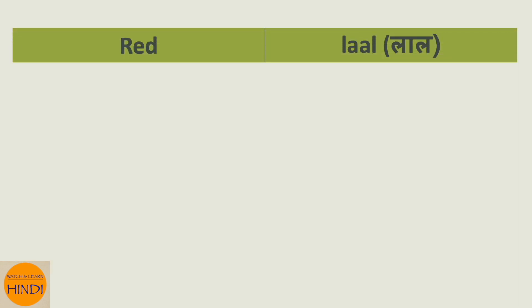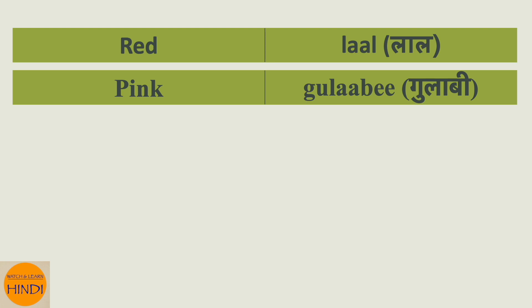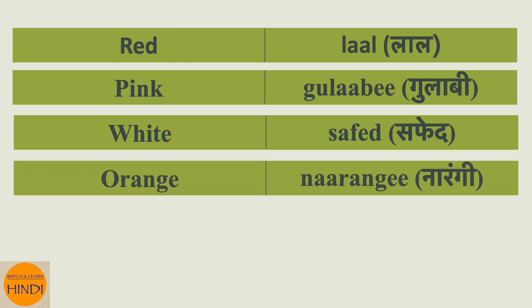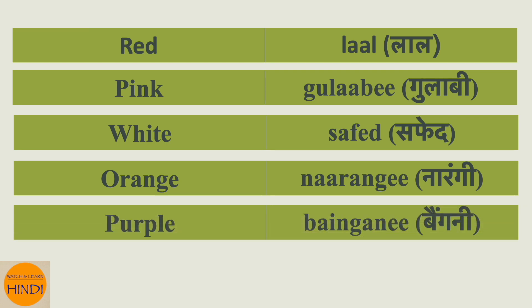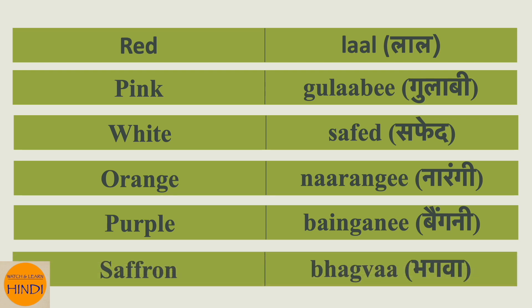Next, let's look at the names of colors that do not change. As you can see, saffron in Hindi is bhagwa — it ends with A but it does not change. This is an exception. Another name for saffron is keseria, and that also ends with A but also doesn't change.